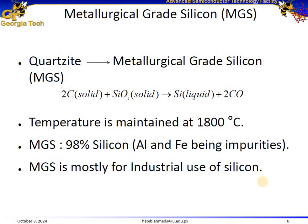This slide discusses metallurgical-grade silicon, a key intermediate product in silicon production. Quartzite reacts with carbon to produce metallurgical-grade silicon and carbon monoxide at a temperature of 1,800°C. This metallurgical-grade silicon contains 98% pure silicon with impurities like aluminum or iron. Metallurgical-grade silicon is mainly used for industrial purposes such as aluminum-silicon alloys and silicones — a group of synthetic polymers made up of repeating units of silicon, oxygen, carbon, and hydrogen.